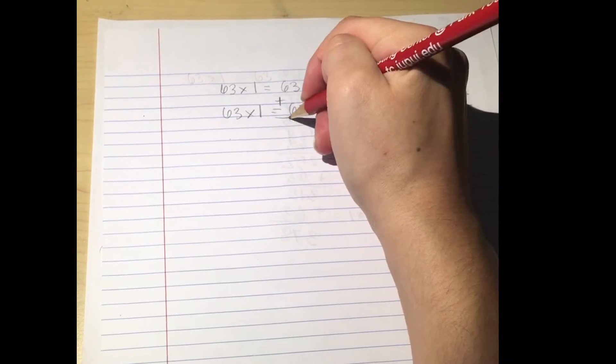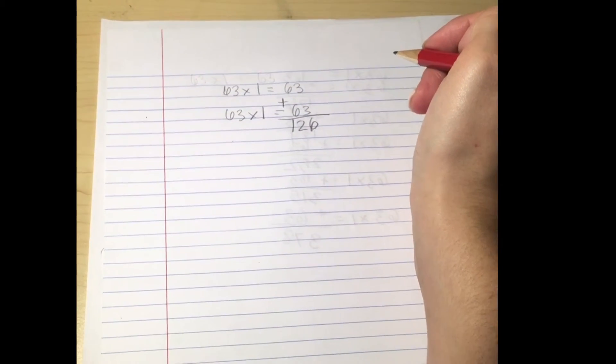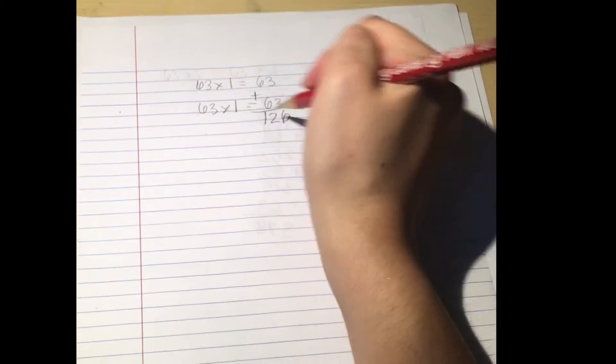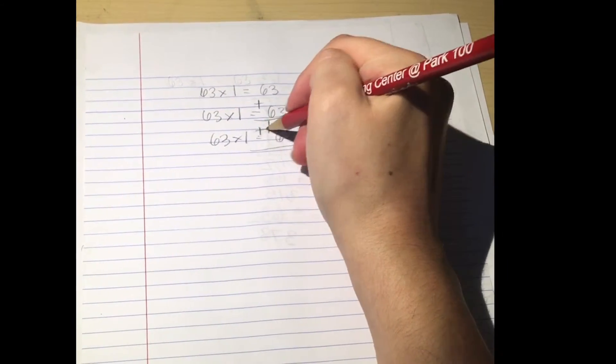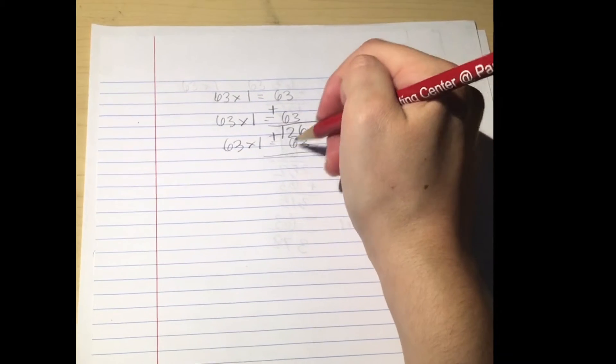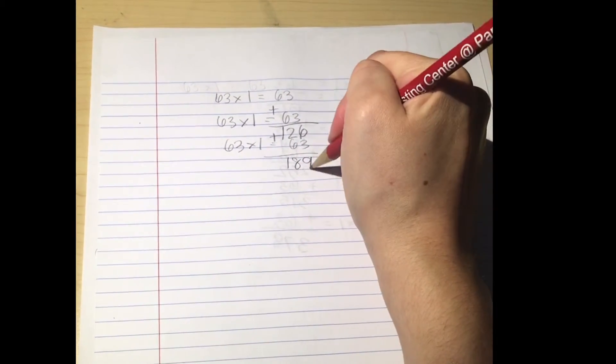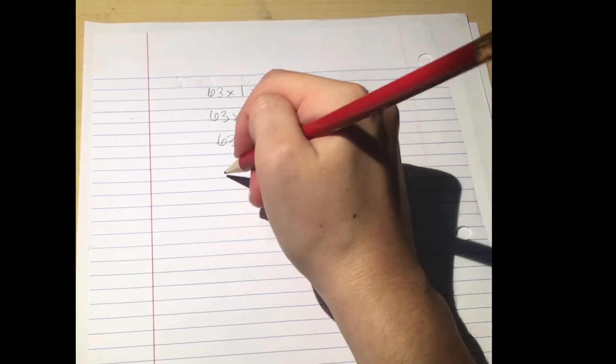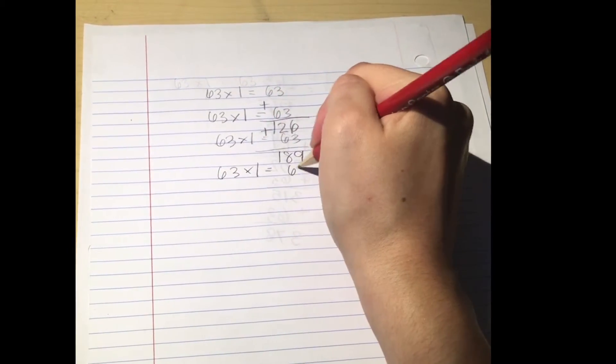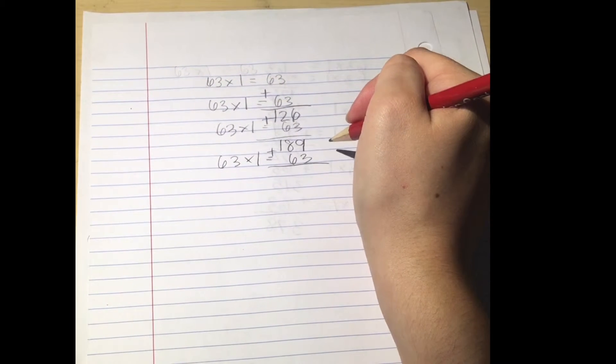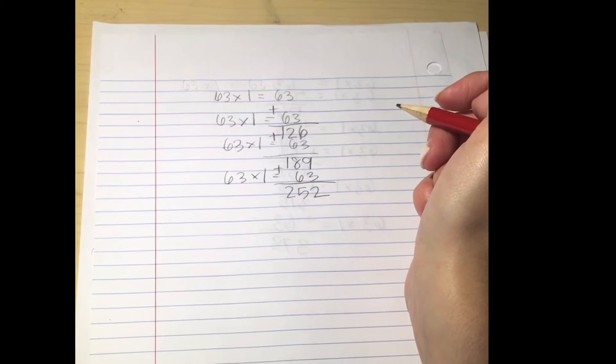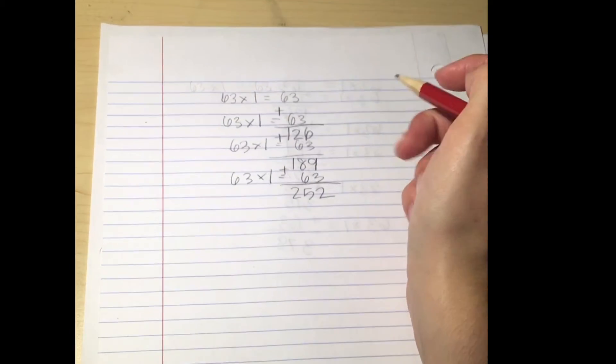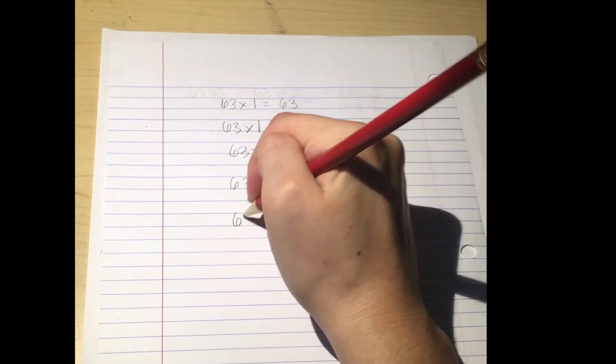So that's getting us closer to 441, so then we'll just keep on adding. 63 times 1, so 126 plus 63 is 189. Then we're going to add another 63 to it. 252, so we're getting closer but we're not quite there yet. So 252, we're going to add another 63.